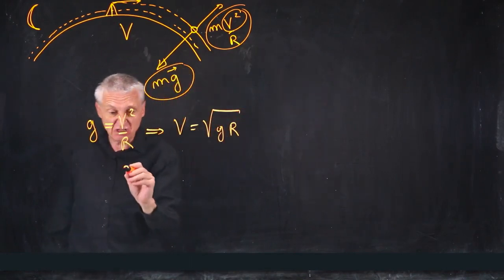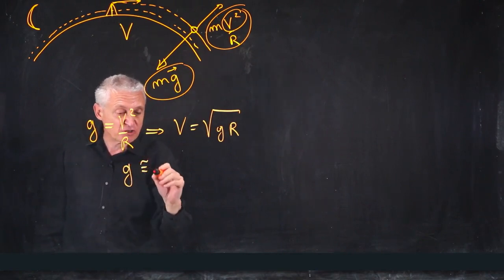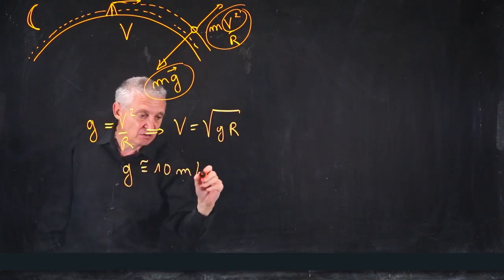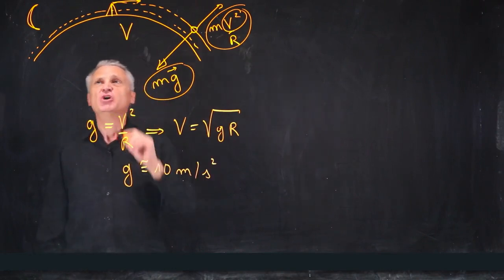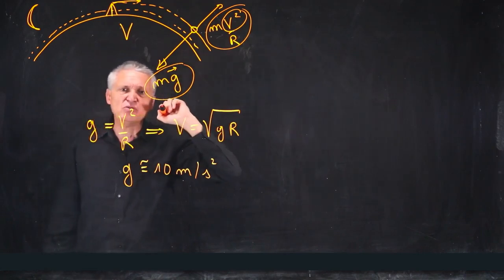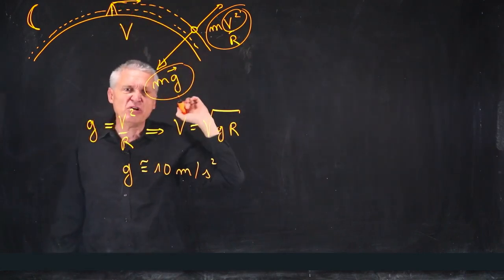So g is known with a good precision, approximately 10 meters per square second. You know that it is not really on ground, but the altitude is about 100 kilometers.